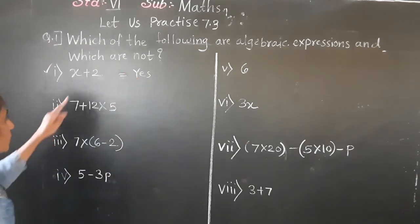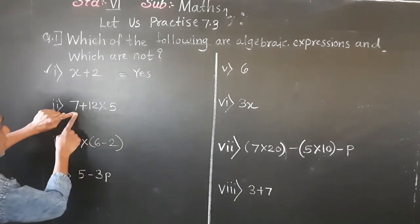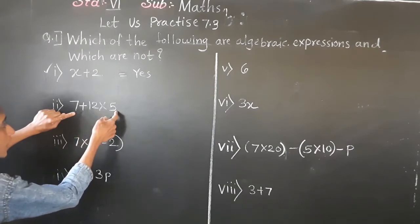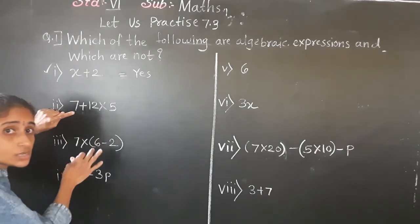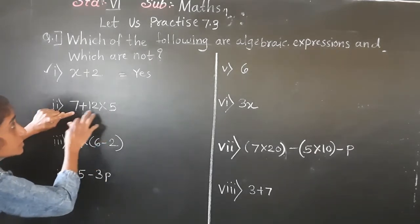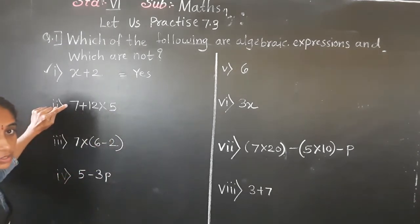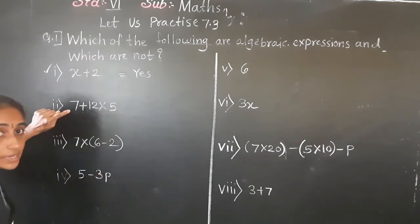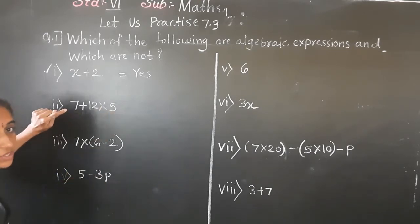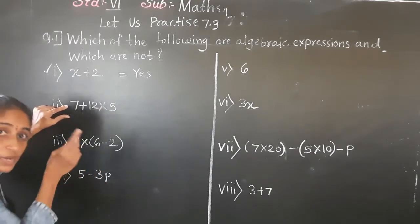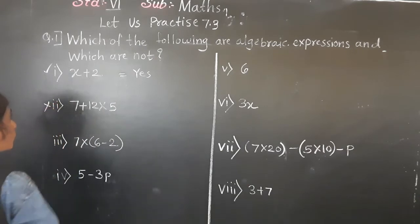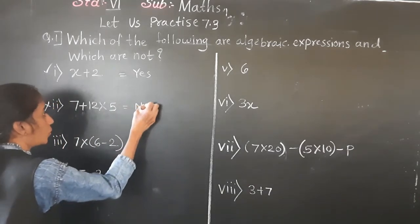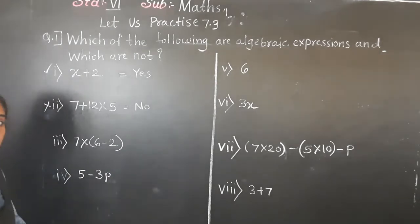The second example: 7 plus 12 multiplied by 5. Basic operations are there and constants are there, but no variable is given. So this is not an algebraic expression.